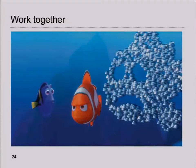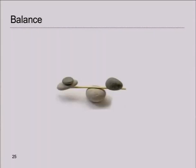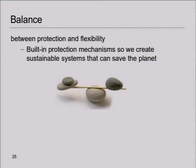How can we do that? Well, I think we should work together. Very nice picture from the film Nemo, where all the little fishes form a very big fish. I think that's something that we have to work on — that's why we are here, to talk to each other, to form alliances, to have better projects, to not reinvent the wheel again, work together, and try to bring all the software pieces together into better software. And we should do that in balance — we should find a balance between protection and flexibility. One of the big advantages of open source software is its flexibility and interoperability.